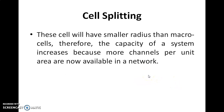The capacity of a cellular network can be increased by creating micro cells within the original cell. These micro cells will have a smaller radius than macro cells. Finally, the capacity of a system increases because more channels per unit area are now available in the network.